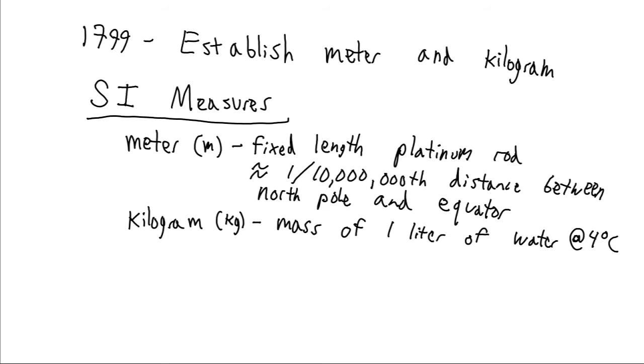The kilogram is based on the meter. If you were to take a cubic meter of water and divide it into a thousand equal pieces, the volume of one of those pieces is called a liter, and the mass of that would be equal to one kilogram. And you do this at four degrees Celsius because that's when water is most dense.